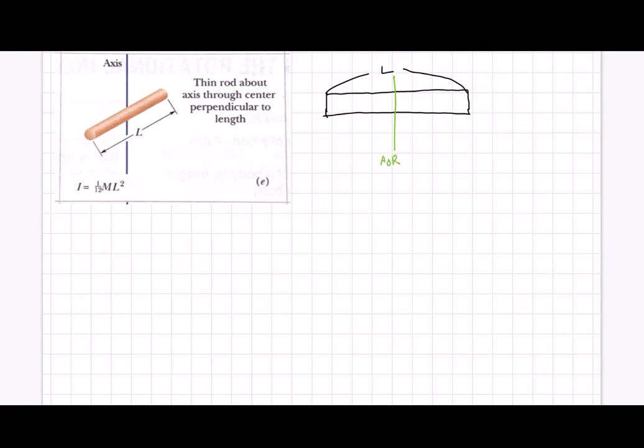And then you will put a small particle over here, that's dm, and then you can say that x would be the distance between the axis of rotation and the particle, the mass particle. Then you would have the x over here.